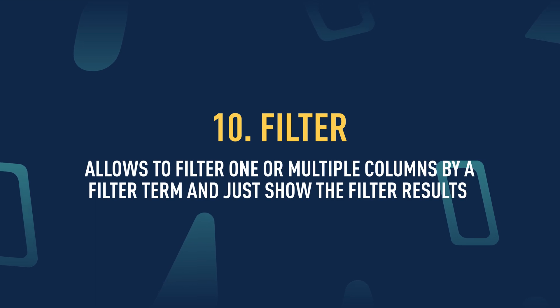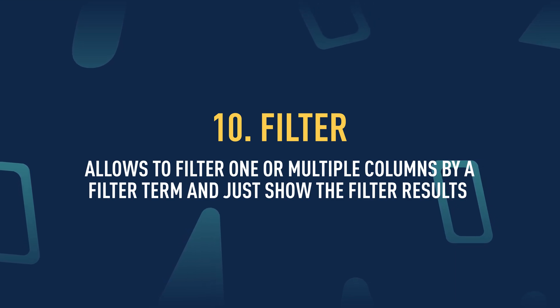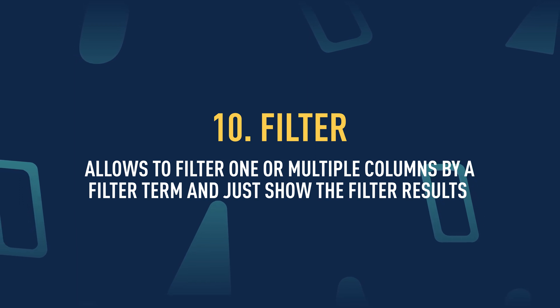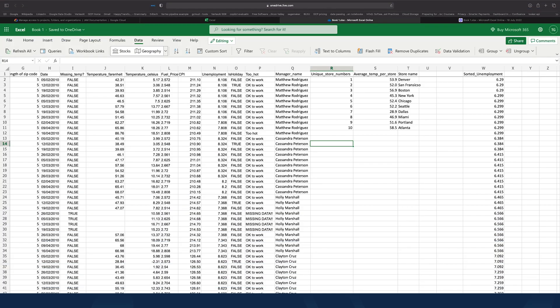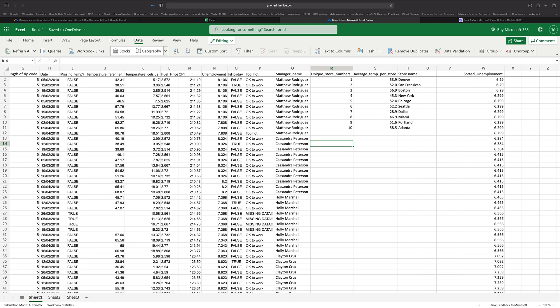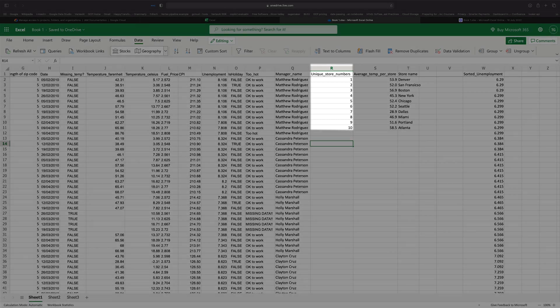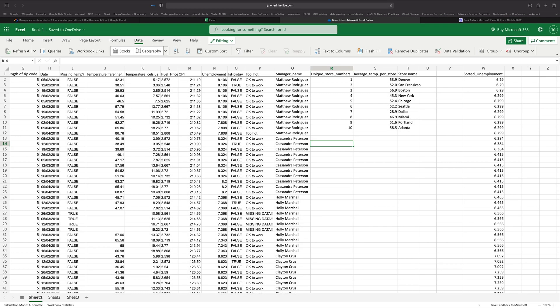The filter function allows you to filter one column or multiple columns by a filter term and just show the filter results. In our case, why don't we filter our unique stores that we previously calculated the average temperature for by a condition as to whether they are on average too hot or not.